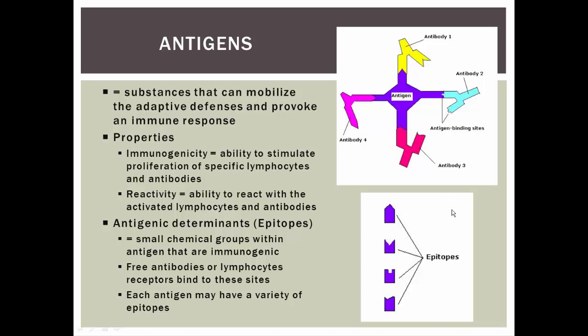Now some large polymers, especially plastics, have many repeating units, so there are few or no epitopes. If there's no epitopes in a plastic, there's no immunogenicity. Our immune system will not mount an immune response to those plastics because there's no antigenic determinants on that plastic. So our immune system can't react with it — therefore no immune response, and our bodies would ignore that plastic.